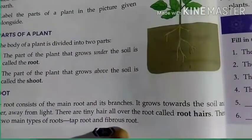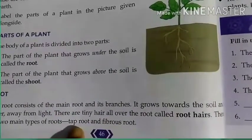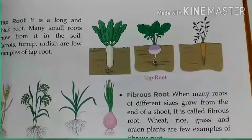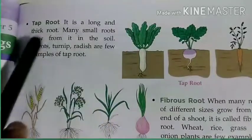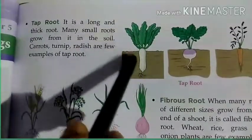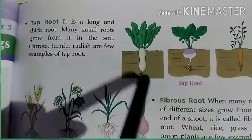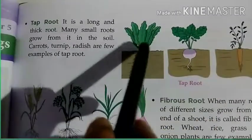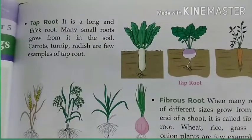There are two types of roots: one is tap root and another is fibrous root. Tap root is a long and thick root. Many small roots grow from it in the soil. Have you seen radish, turnip, or carrot? These are examples of tap root — they have one big long thick root.